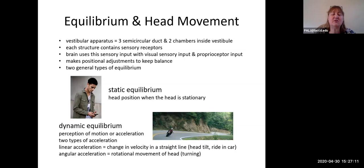Dynamic equilibrium has to do with perceiving motion or a change in speed like acceleration. When you push on the gas, there's a couple of different types of acceleration. The first type is when you're in a straight line—like your head is tilting, you're riding in the car, stepping on the gas, accelerating when you take off in an airplane. The other type is angular, which has to do with rotating your head around or you're leaning over.